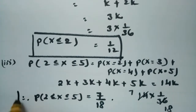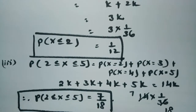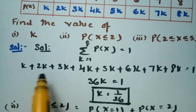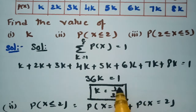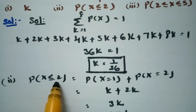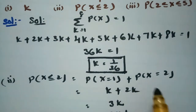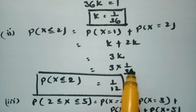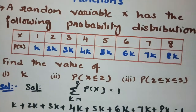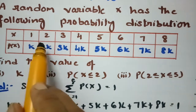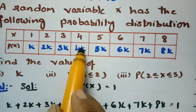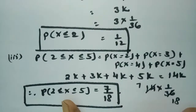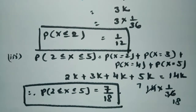In summary: first we find k by adding all probabilities and equating to 1, giving k = 1/36. Then P(X ≤ 2) = k + 2k = 3k = 1/12. And P(2 ≤ X ≤ 5) = 2k + 3k + 4k + 5k = 14k = 7/18. I will be uploading many more problems related to this series — please subscribe to this channel.